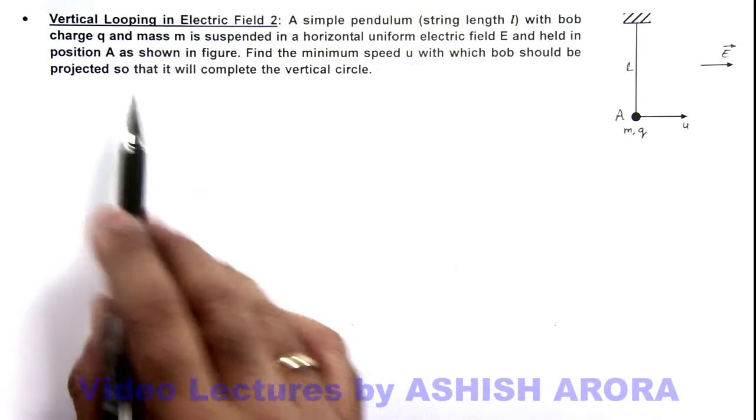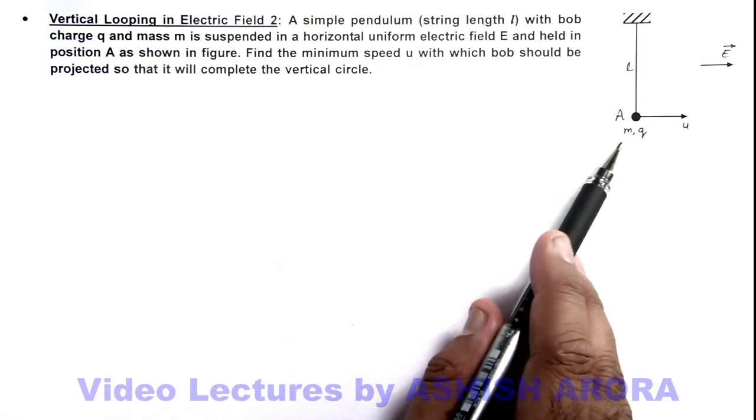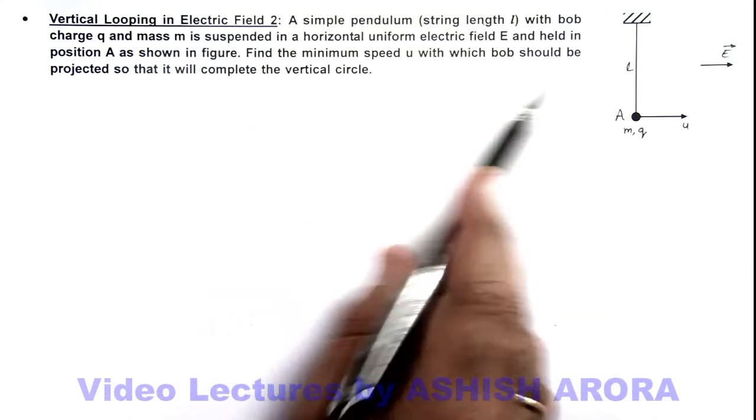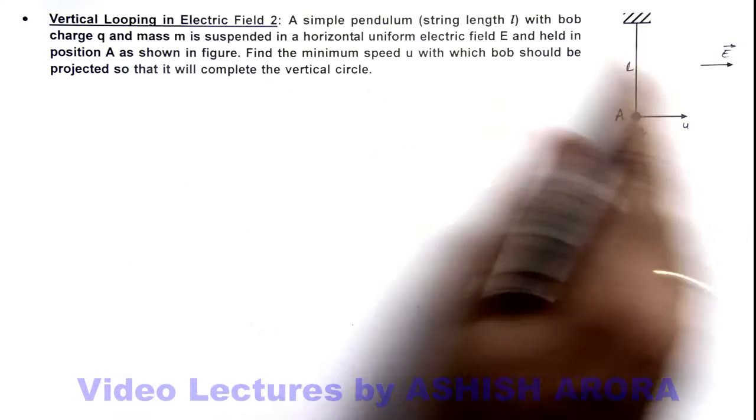And held in position A as we can see here in the figure. It is asking us to find the minimum speed u with which bob should be projected so that it'll complete the vertical circle.